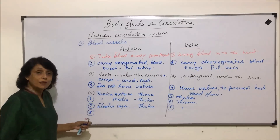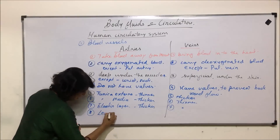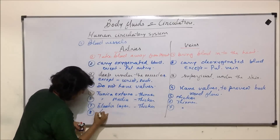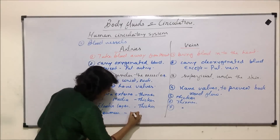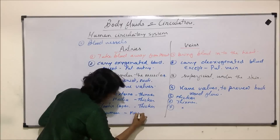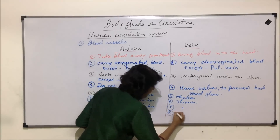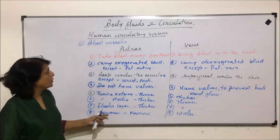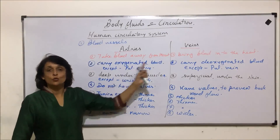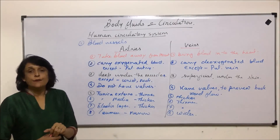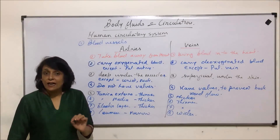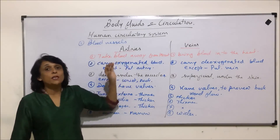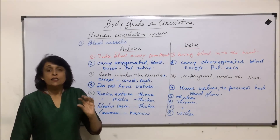Let us also compare the lumen — it is narrow in arteries whereas in case of veins it is wider. A few more points on which we can compare these two types of blood vessels: if an artery is cut, the blood flow which takes place is peculiar — it is jerky — because every time the heart beats, it pumps the blood.